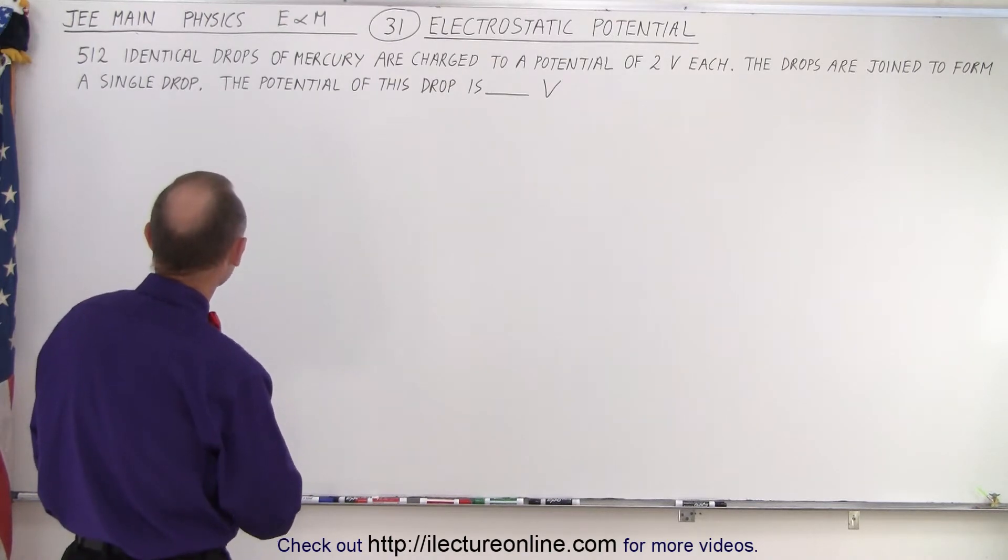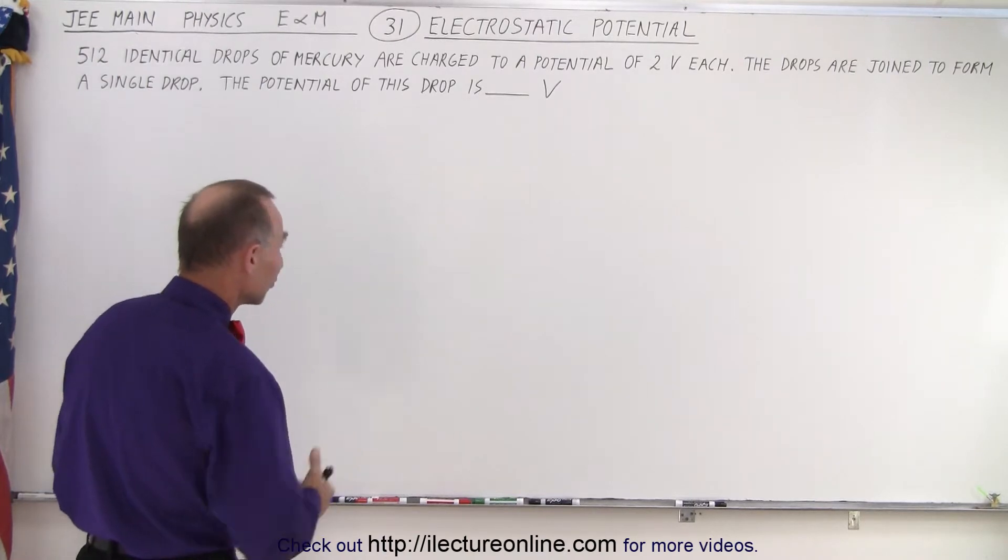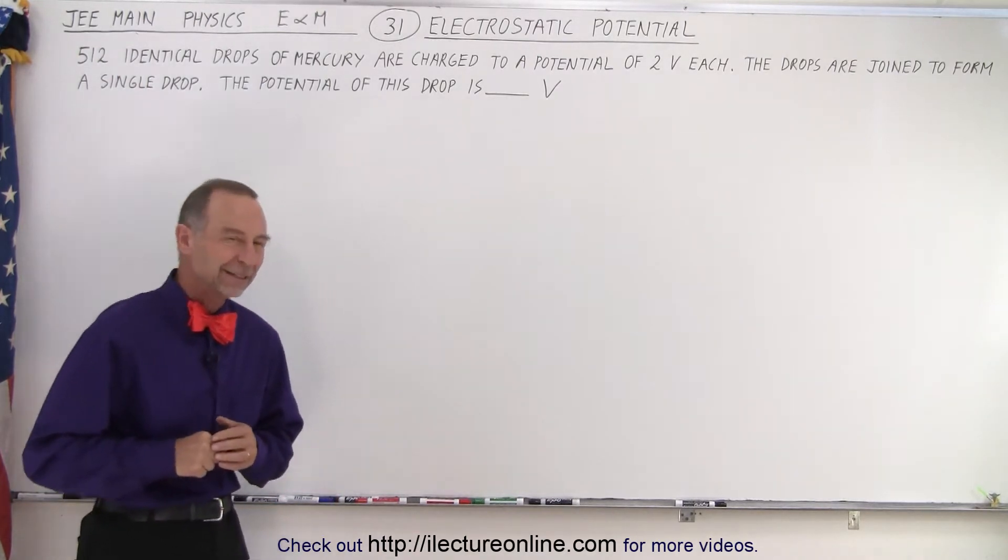512 identical drops of mercury are charged to a potential of two volts each. The drops are joined to form a single drop. The potential of this drop is, and so we're looking for a numerical value in volts.